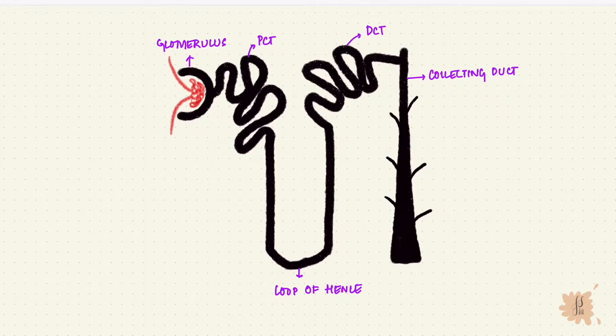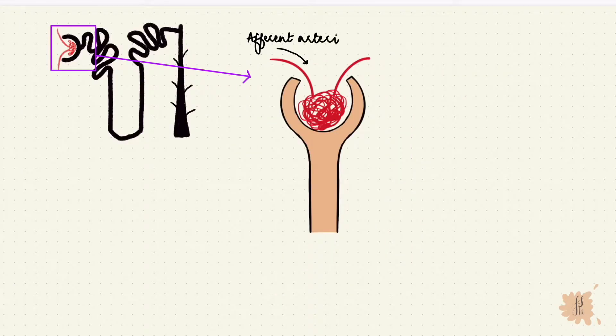Blood flows through the afferent arteriole into a tuft of capillaries, and that's the glomerulus. It exits via the efferent arteriole.